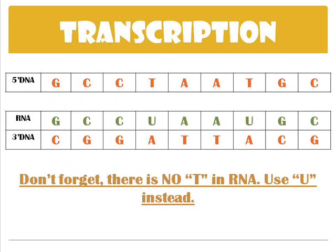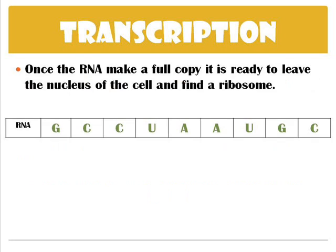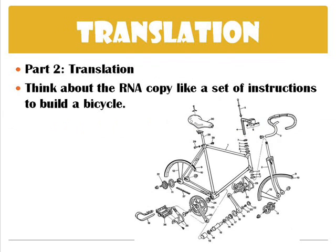RNA will get to a certain point where it finishes. Just a reminder — there is no thymine in RNA; RNA uses uracil instead. The RNA will unzip itself from the DNA and is now its own single strand floating around in the nucleus. Once it has this full copy, it's ready to leave and go find a ribosome in the cytoplasm. That whole process was transcription.